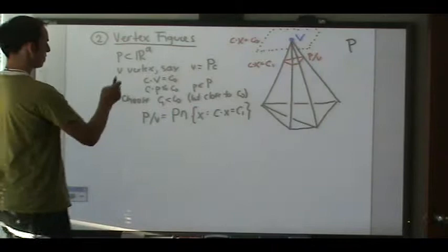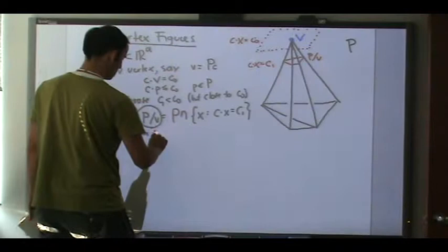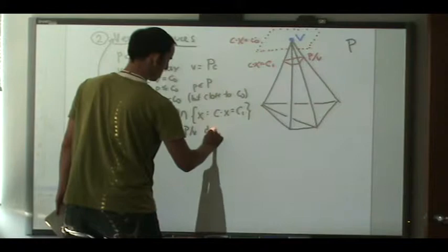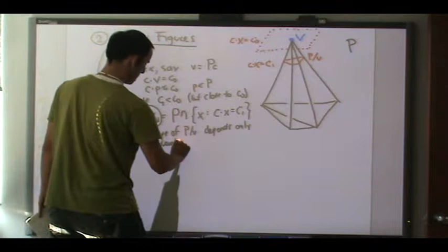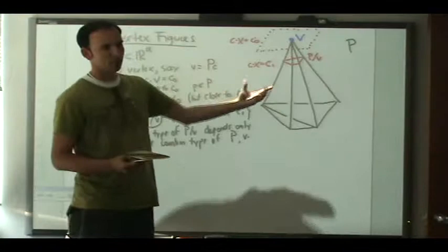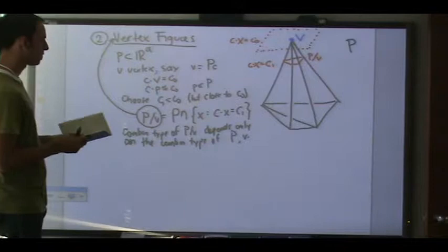That's the vertex figure. Again, a fact is that the combinatorial type of p mod v depends on the combinatorial type of p. If you take a polytope p that is combinatorially isomorphic to this one — same faces — and you pick the same vertex v and make the same cut, you get the same combinatorics.